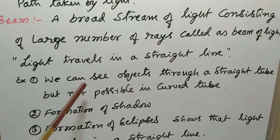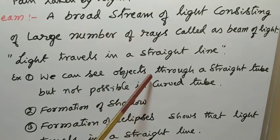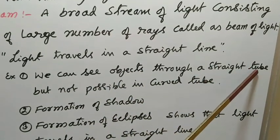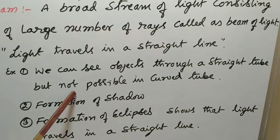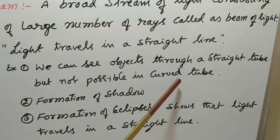Number one: we can see objects through a straight tube but not possible in a curved tube.